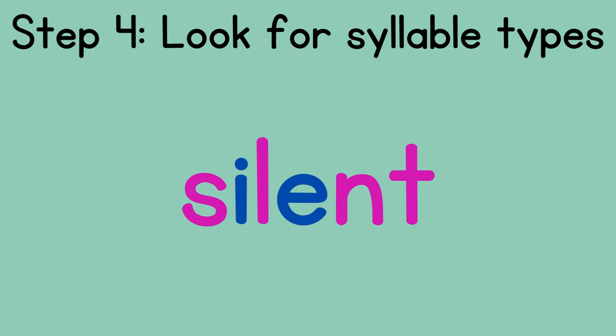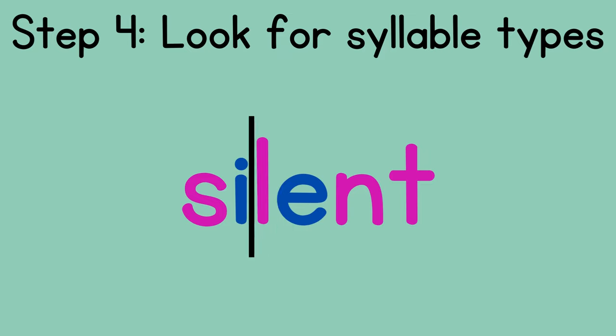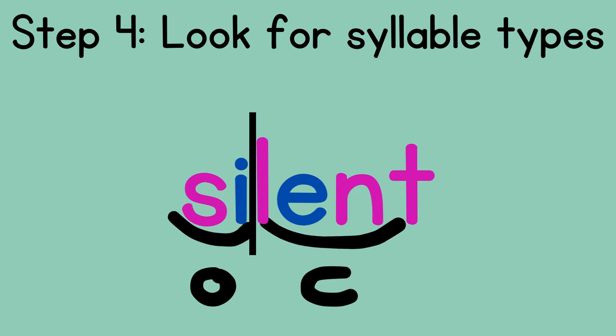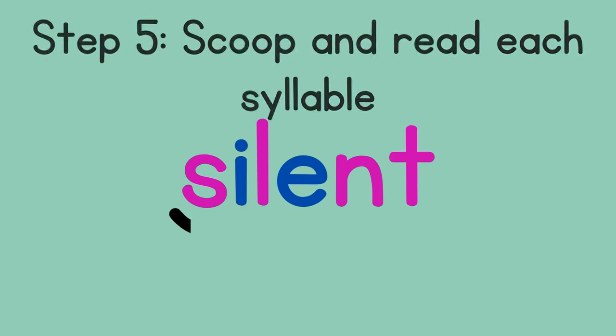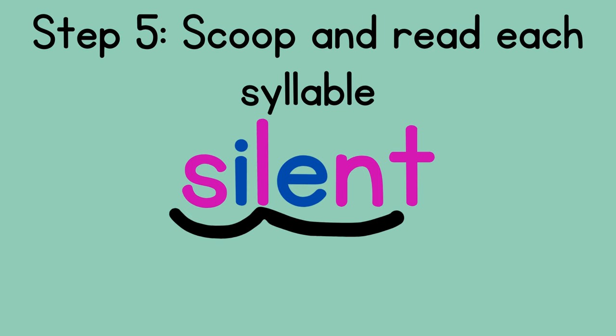Fourth, look for syllable types. We have to decide where to divide the word because there's only one consonant. If we divide after the L, then the first syllable is 'sil' — sil-ent. That doesn't make sense. Let's divide after the I so it says 'sigh.' Then we'll have an open syllable for 'sigh' and a closed syllable for 'lent.' Lastly, we scoop the syllables together: sigh-lent — silent.